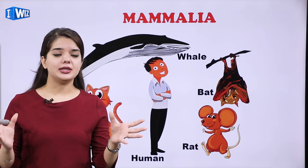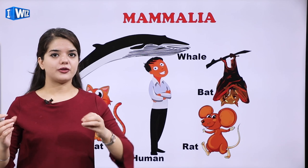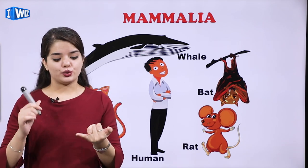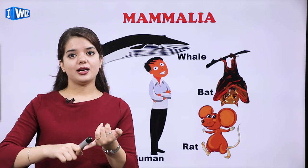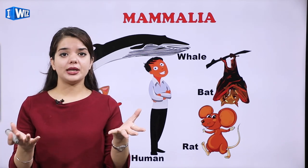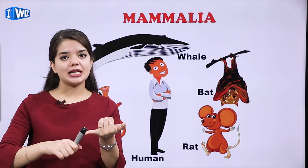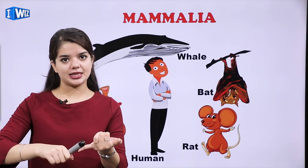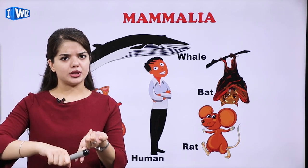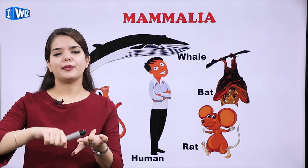There are different animals which belong to different subgroups. In the Reptilia group we have lizard. In Aves we have birds. In Mammalia we have humans, cats, and dogs. I hope you liked this lecture. Thanks for watching — keep watching the next videos.